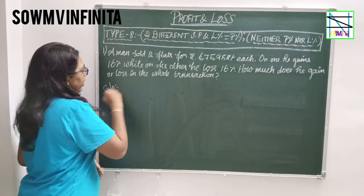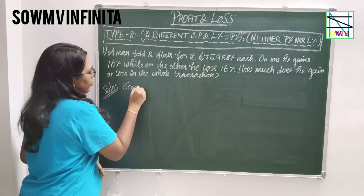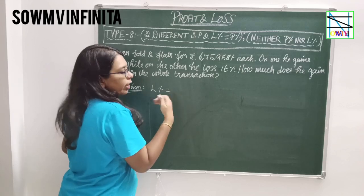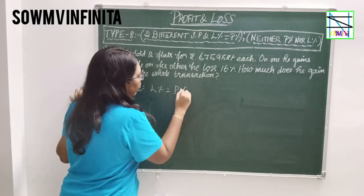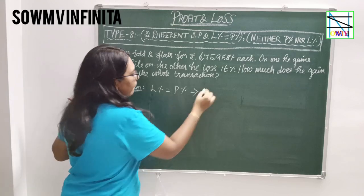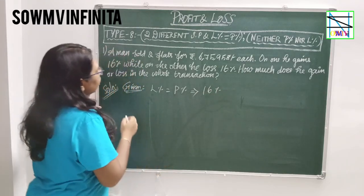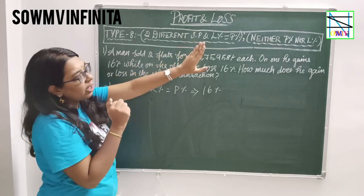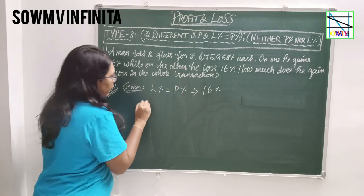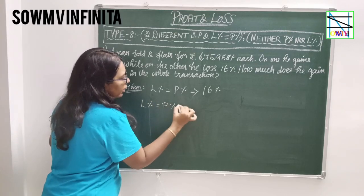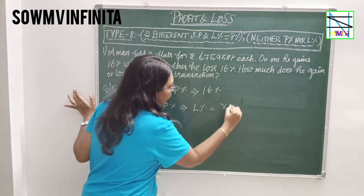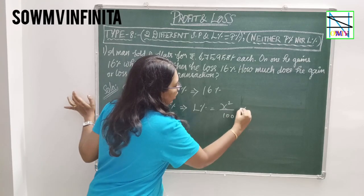To solve this problem: since Loss Percent and Gain Percent are equal, we can use the formula: Loss Percent = X² / 100. Here X is 16.